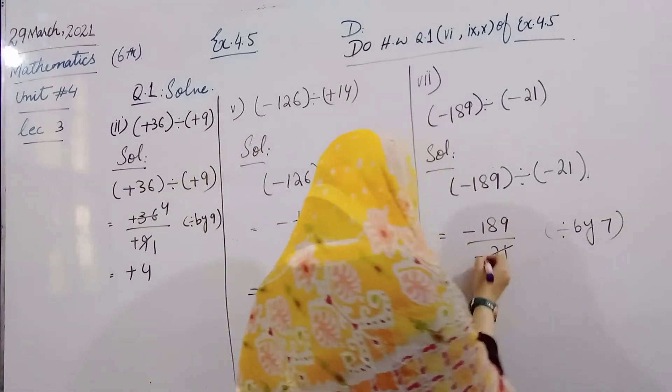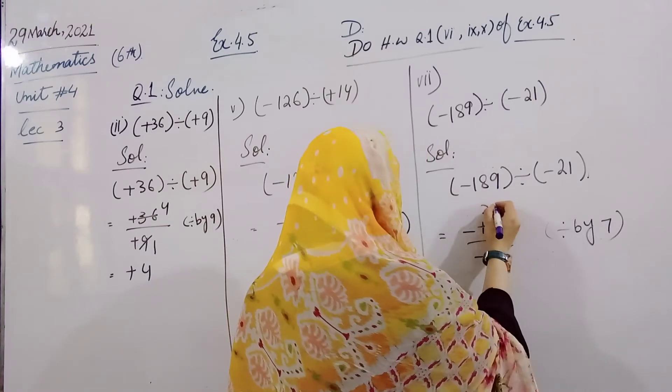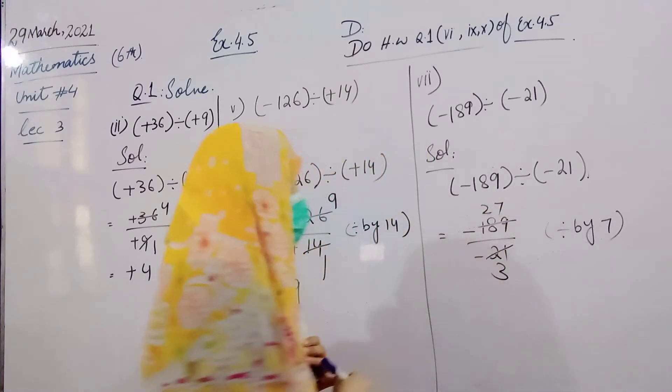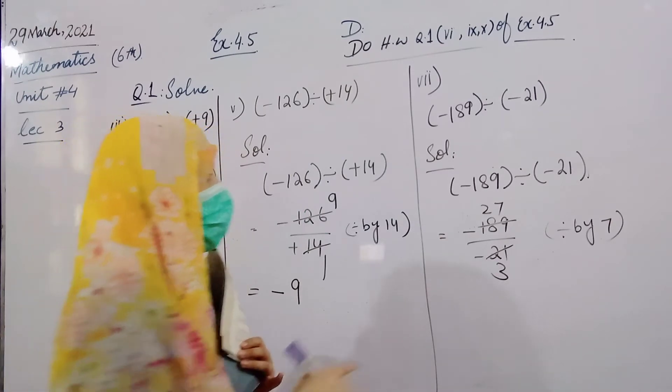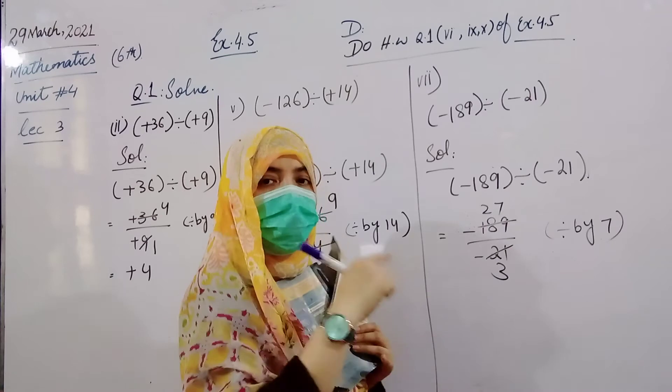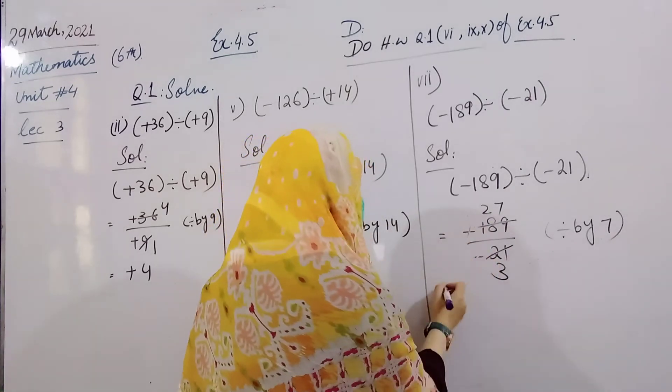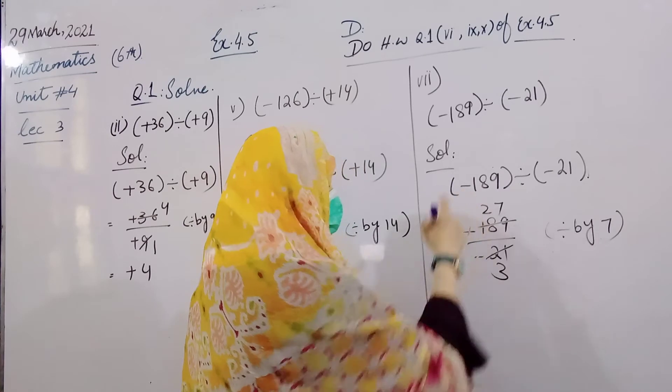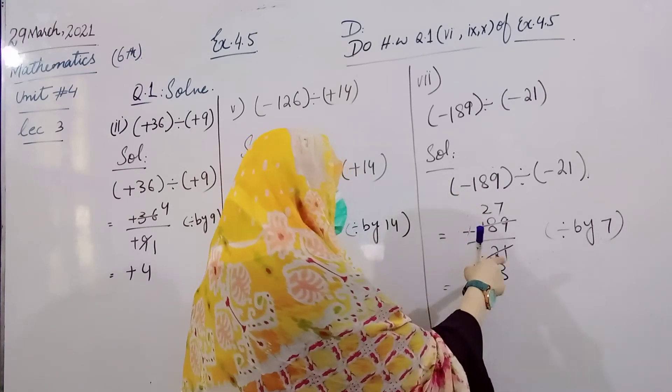7 times 3 is 21, 7 times 2 is 49, 7 times 7 is 49. Now we have minus minus, minus minus, minus minus equals plus. 7.